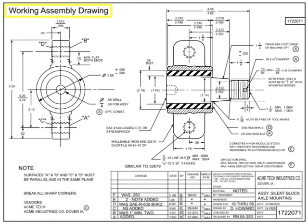Working assembly drawings combine detail drawings and assembly drawings. These drawings contain enough information to both create the subcomponents and assemble the finished product. Working assembly drawings show dimensions where required, as well as balloon identifiers to indicate each separate component part of the assembly. Working assembly drawings are ideal for smaller, simpler assemblies. Since they combine both detail and assembly characteristics, they can become complex very quickly.